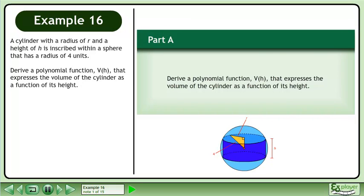A cylinder with a radius of r and a height of h is inscribed within a sphere that has a radius of 4 units. Derive a polynomial function, V(h), that expresses the volume of the cylinder as a function of its height.